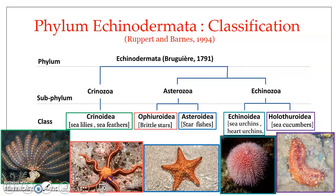Here you can see the Ophiuroidea and the Asteroidea. Ophiuroidea includes basket stars, brittle stars, or serpent stars. The members have branched arms — basket stars are named because of their branched arms, while brittle stars denotes fragile and easily breakable arms. Asteroidea are almost flat, free-living echinoderms, popularly known as starfishes or sea stars.